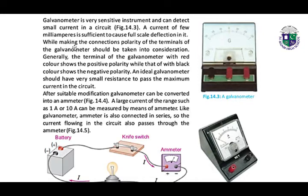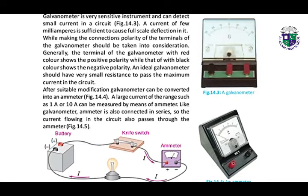While making the connections, polarity of the terminals of the galvanometer should be taken into consideration. Generally, the terminal of the galvanometer with red color shows the positive polarity and black color shows the negative polarity. An ideal galvanometer should have very small resistance to pass the maximum current in a circuit.